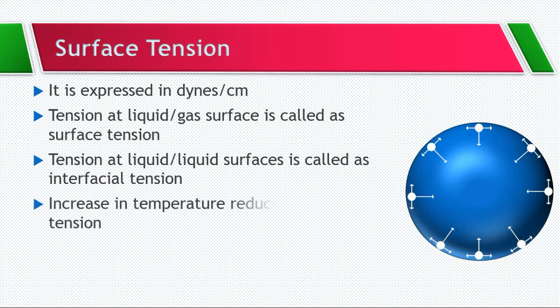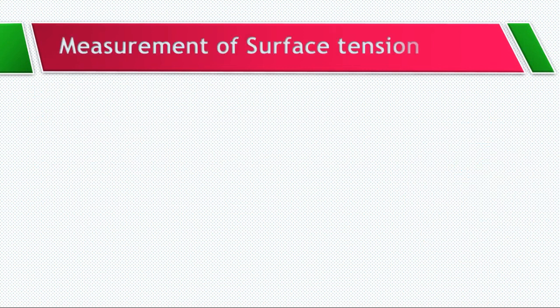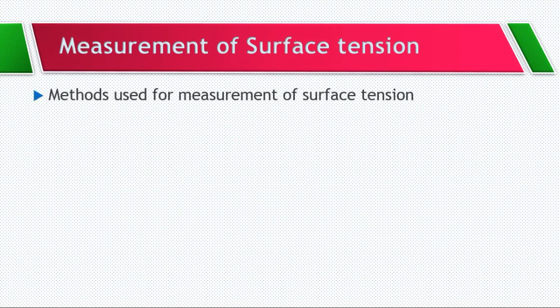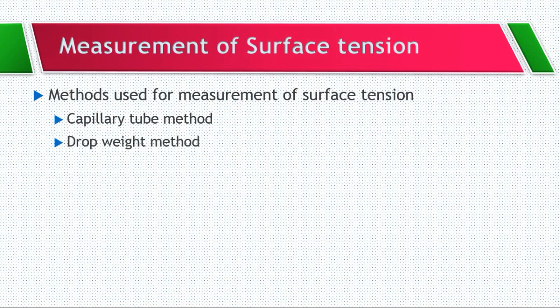Surface tension is reduced as temperature increases, so increasing temperature leads to reduction in surface tension. Surface tension is measured with the help of various methods — the capillary tube method, the drop weight method where a stalagmometer is used, and the tensiometer method.